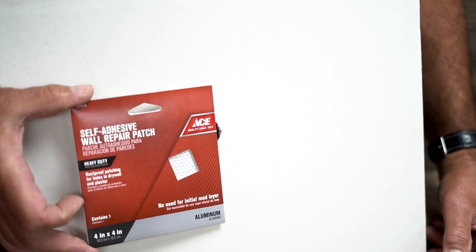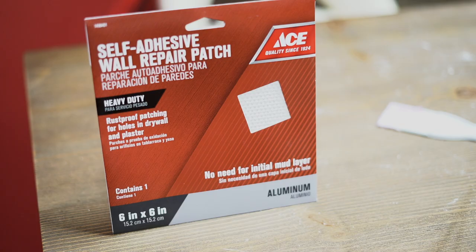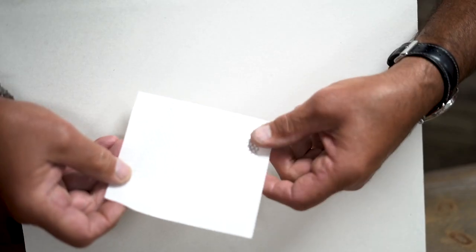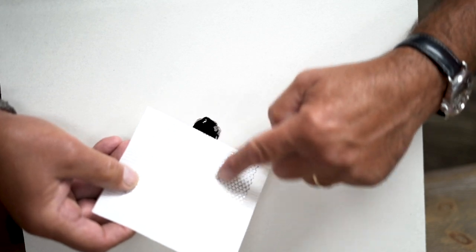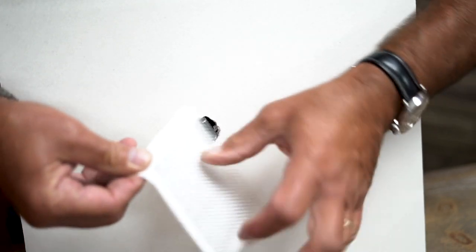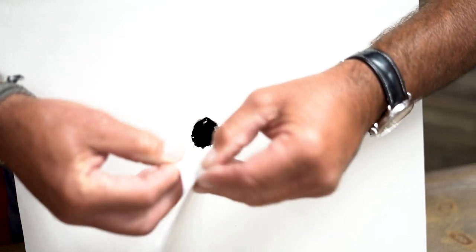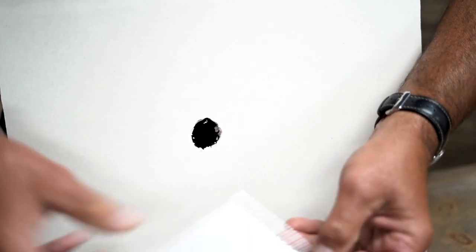This particular one is four by four. They make a six by six, even a twelve by twelve, but you'll see that what it is inside there is a little mesh metal attached to a fiberglass mesh that has an adhesive on it.